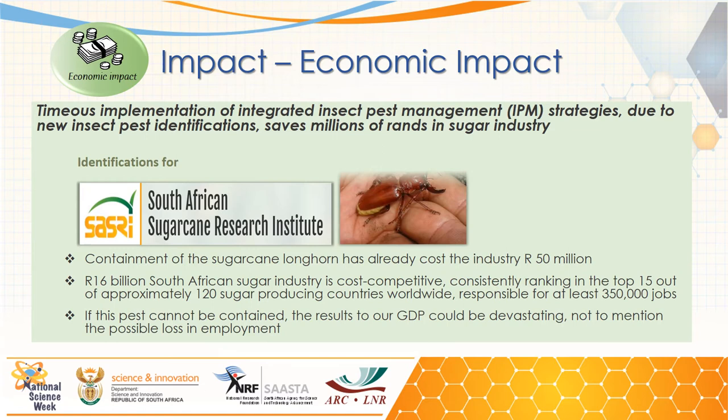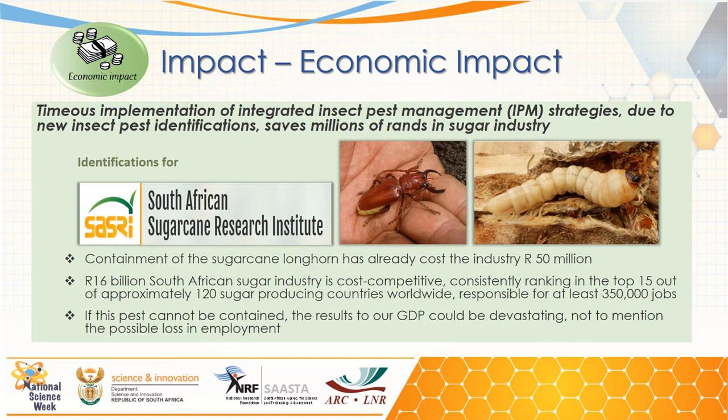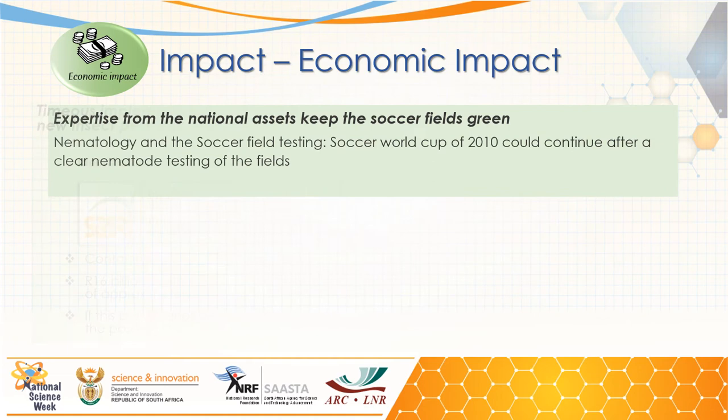The next impact is economic impact. The sugarcane nematode beetle was recently identified and found in the country. This pest has already cost the sugarcane industry 5 million rand. This is a large industry in South Africa, valued at around 6 billion rand. It is a cost-competitive industry with South Africa ranking in the top 15 of about 120 sugar-producing countries worldwide, and it creates at least 350,000 jobs. If this pest was not identified or contained, it would have had devastating effects on South Africa's GDP and possibly led to job loss.